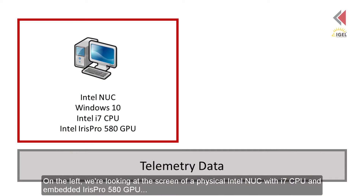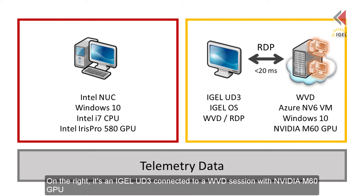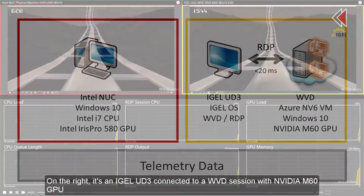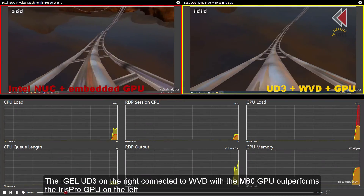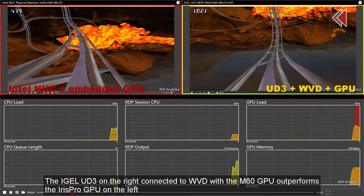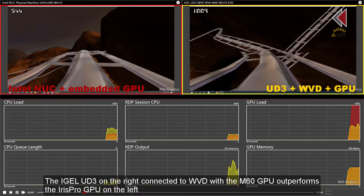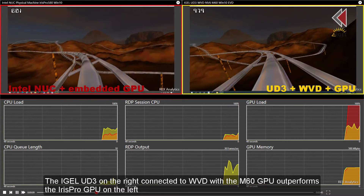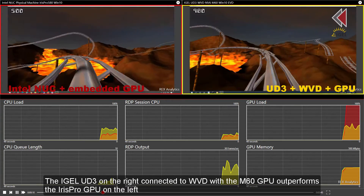On the left, we are looking at the screen of a physical Intel NUC with an i7 CPU and embedded Iris Pro 580 GPU. On the right, it's an IGEL UD3 connected to a WVD session with NVIDIA M60 GPU. The IGEL UD3 on the right connected to WVD with the M60 GPU outperforms the Iris Pro GPU on the left.